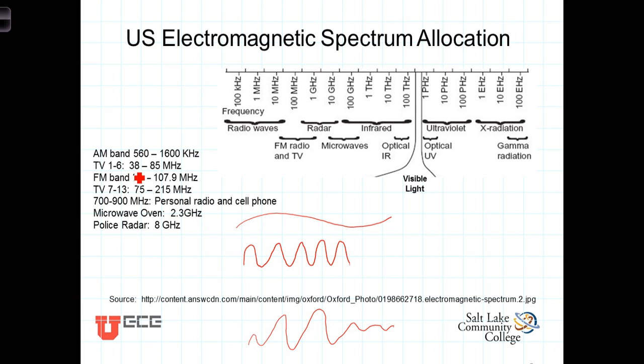The television stations run between, the channels one through six, run between 38 and 85 megahertz. So, on up here in this range, you'll find television stations, at least the lower frequency channel stations.